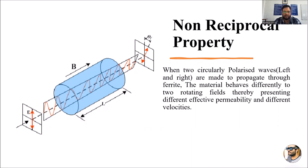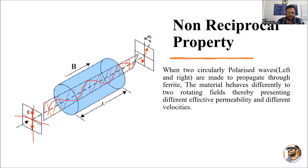The electric field and magnetic field keep rotating within the ferrite device. The left and right circularly polarized waves traveling through the ferrite exhibit different effective permeability and move with different velocities — this is the non-reciprocal property. If you carefully observe, these two circularly polarized signals show a slight change in angle as they pass through the ferrite device.